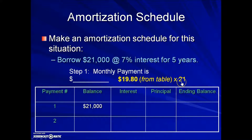We're multiplying it by 21 because the table is set up for monthly payments for $1,000 borrowed and we're borrowing $21,000, or 21 times as much. That gives us a monthly payment throughout the entire five years of $415.80.